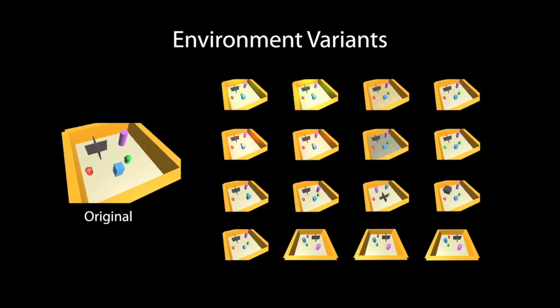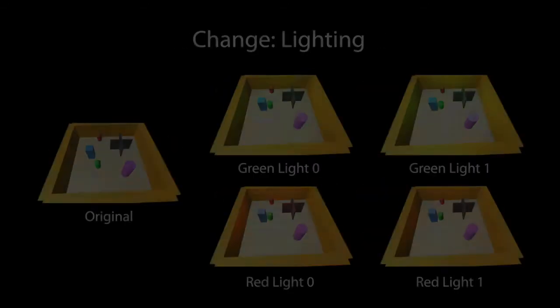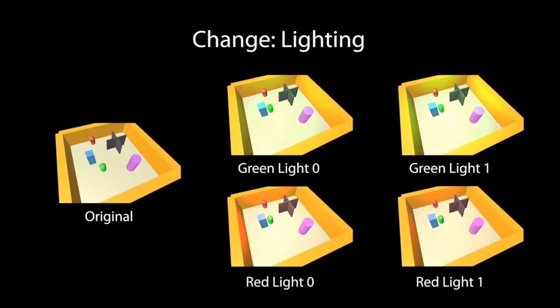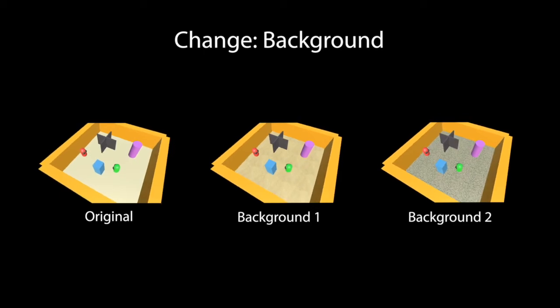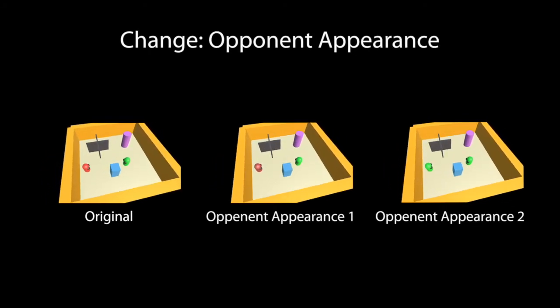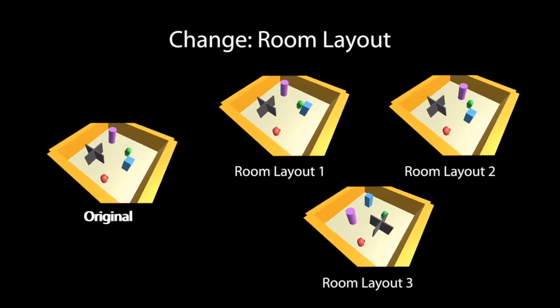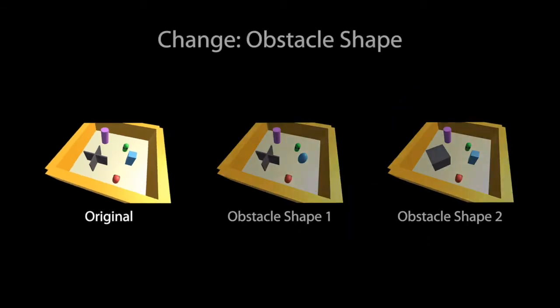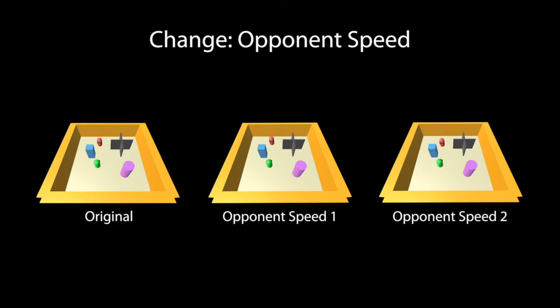We propose 15 environmental variants covering a variety of changes, including lighting, image background texture, opponent appearance, room layout, obstacle shapes, and opponent speed.